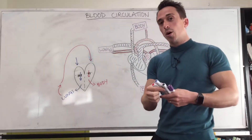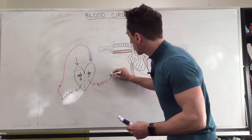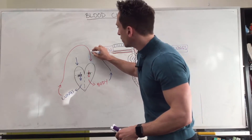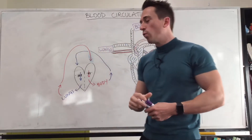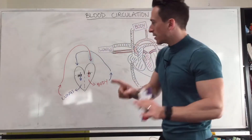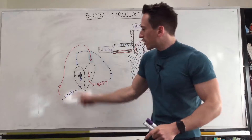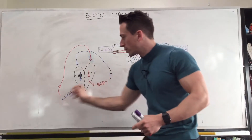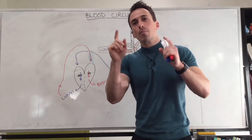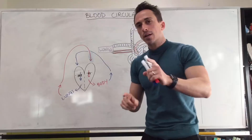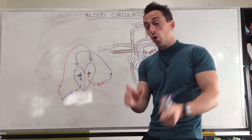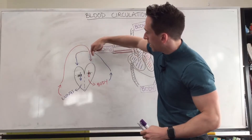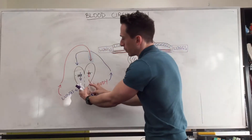Once it's delivered oxygen to the body it becomes deoxygenated, so it needs to go back to the heart — back to the right atrium. So what we have is a circuit: a circuit for the lungs and a circuit for the body. The right hand side of the heart deals with deoxygenated blood and throws it to the lungs; the left hand side deals with oxygenated blood and throws it to the body. Blood always enters the atria and always leaves via the ventricles. If it leaves the heart it's via an artery; if it comes back to the heart it's via veins.